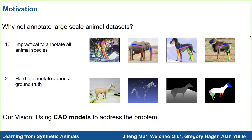Why don't we just annotate large-scale animal datasets? For animals, it's impractical to annotate all animal species. In addition, it's hard to annotate various ground truth, particularly for those in 3D. Therefore, we propose to use CAD models to address the problem.